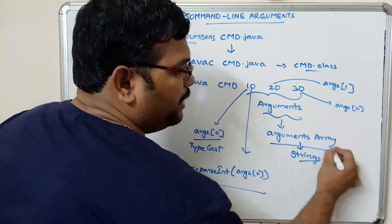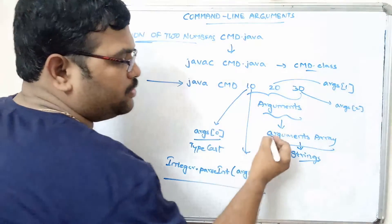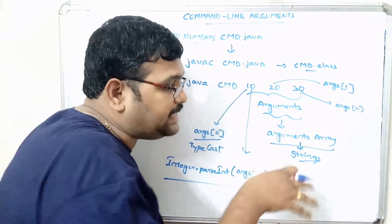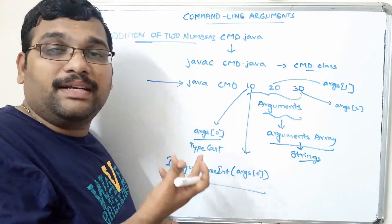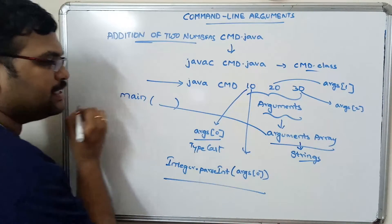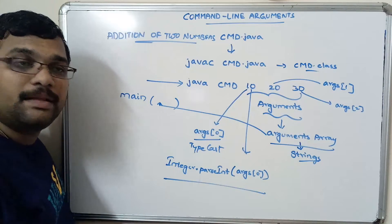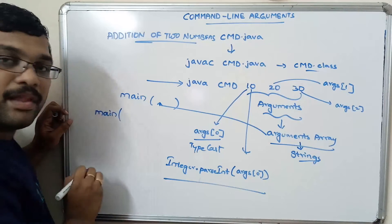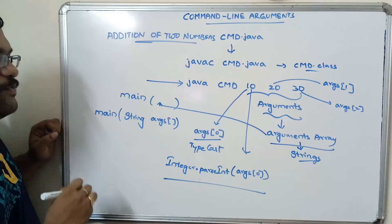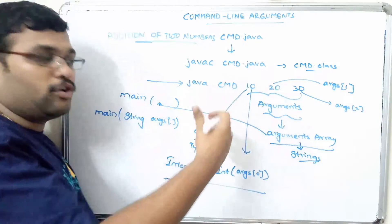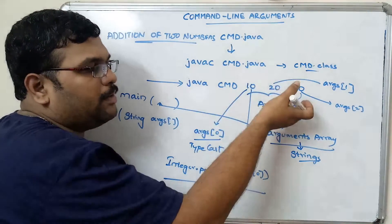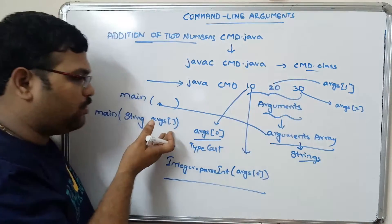Where do we pass this arguments array? Arguments are inputs given to a function. We have to pass the arguments array to the main function. All these arguments must be declared inside the main function as a String array. We write String[] args — we need not specify the size because at runtime we are providing the number of arguments, so it dynamically allocates space. Whatever arguments we pass at runtime will be stored in this string array.